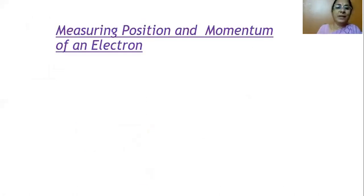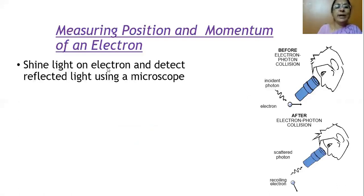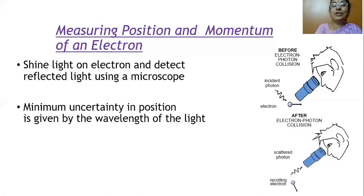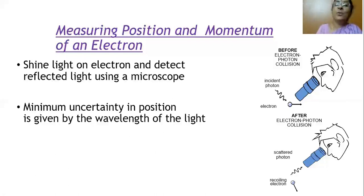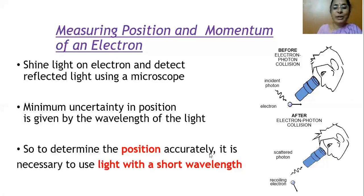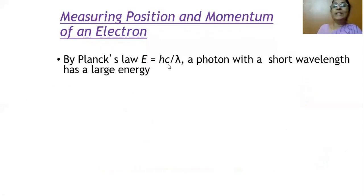To measure the position of the electron, you need to shine light on the electron and detect the reflected light using a microscope. If you want to minimize the uncertainty in measuring position, you should use a proper wavelength — the wavelength should be almost equal to the particle size. To determine position accurately, it is necessary to use light with short wavelength. By Planck's law, E = hν and ν = c/λ, so when the wavelength is very small, the energy of the photon becomes very high.